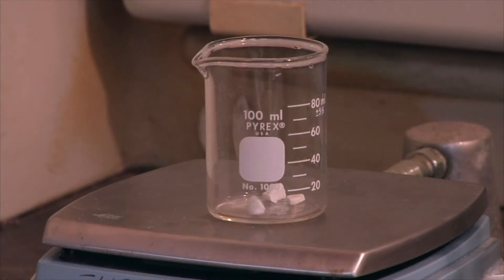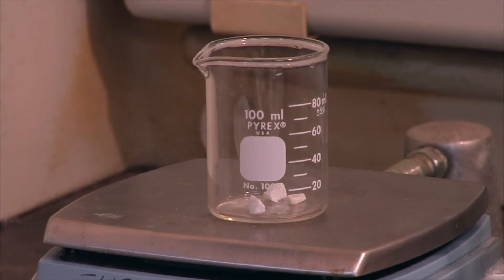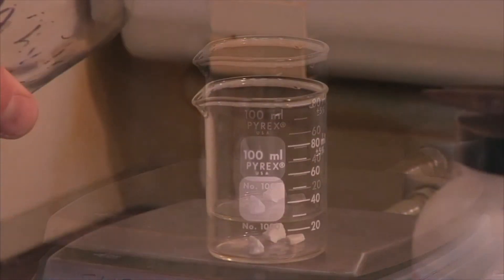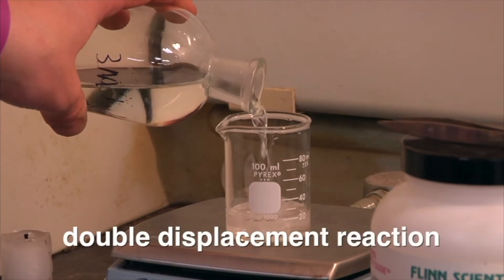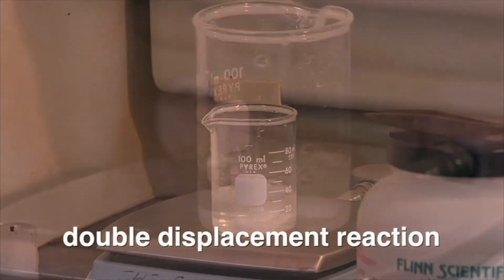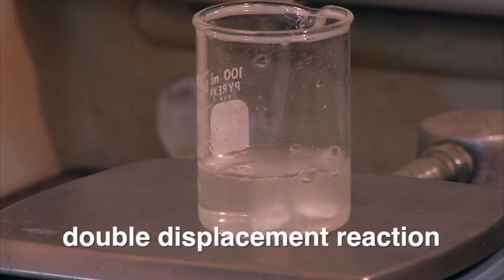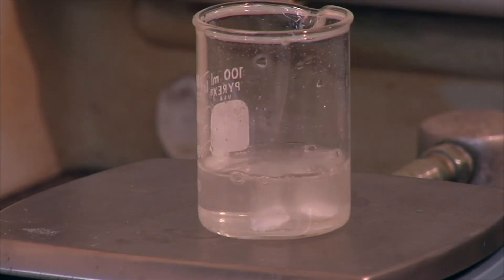The products are calcium sulfate, a white solid, water, and carbon dioxide. This is an acid-base reaction, which is a special case of the double displacement reaction. The signs this is a chemical reaction are the production of heat and the formation of bubbles as carbon dioxide is given off.